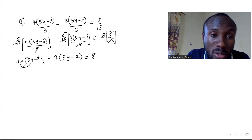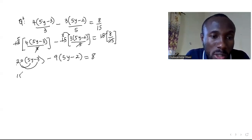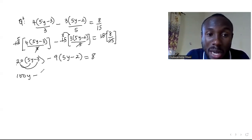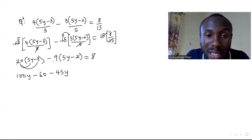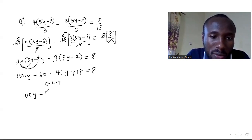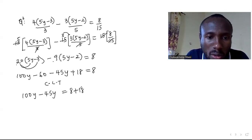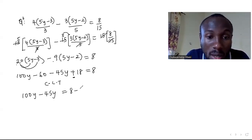Now distribute: 20 times 5y gives 100y, and 20 times minus 3 gives minus 60. Then minus 9 times 5y gives minus 45y, and minus 9 times minus 2 gives positive 18, equal to 8. Arrange the like terms: 100y and minus 45y on the left; 8 minus 18 on the right — the positive 18 crossing over becomes minus 18.